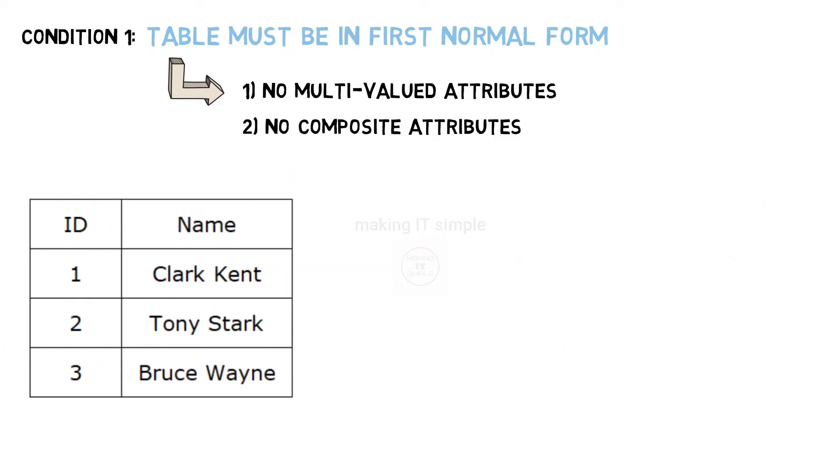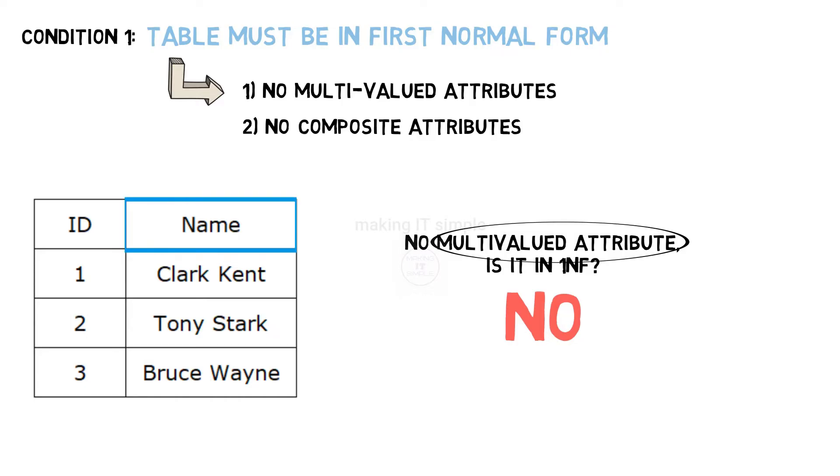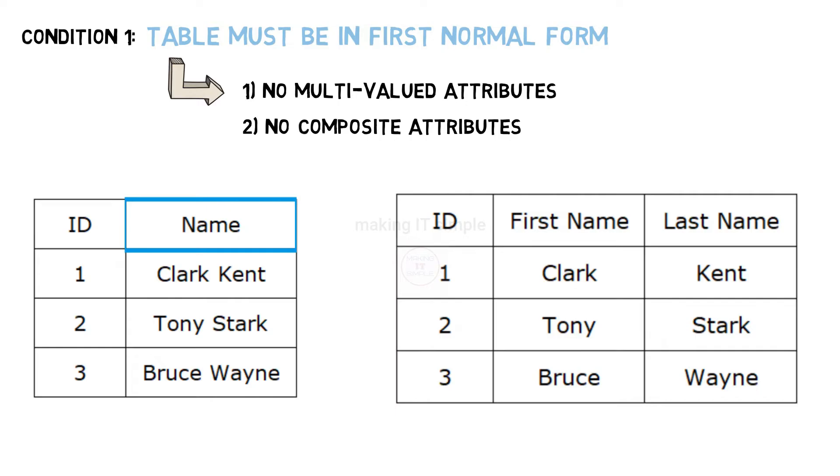See this following table. It does not have any multivalued attribute. Is it in 1NF? Again the answer is no. It does not contain multivalued attribute but it contains attribute name, a composite attribute which can be further divided. So again this is not in 1NF.